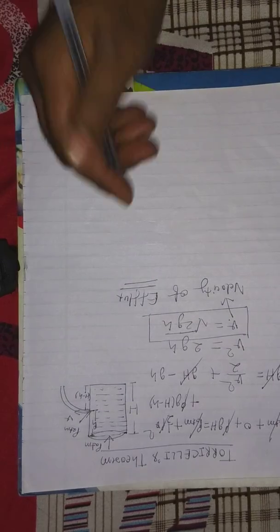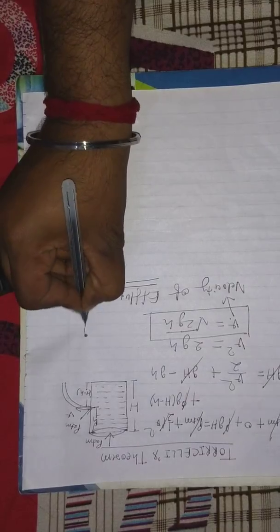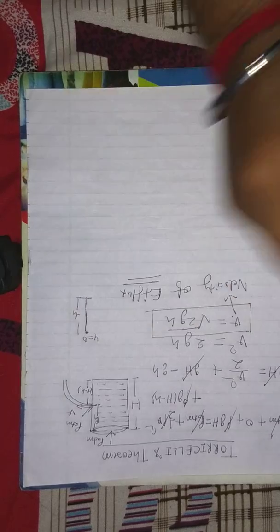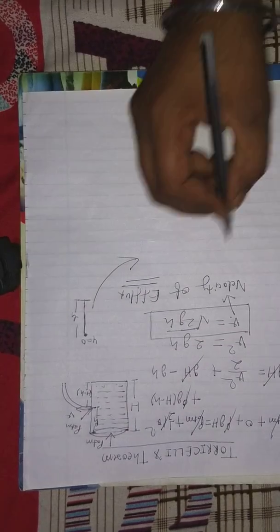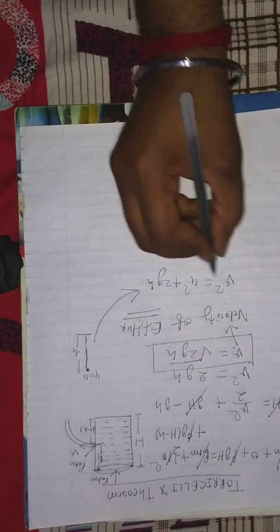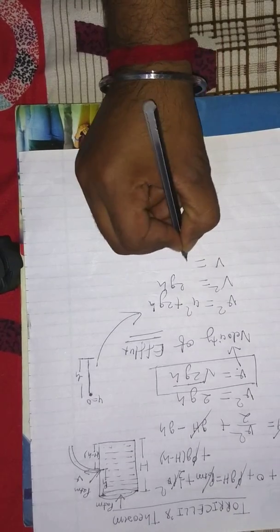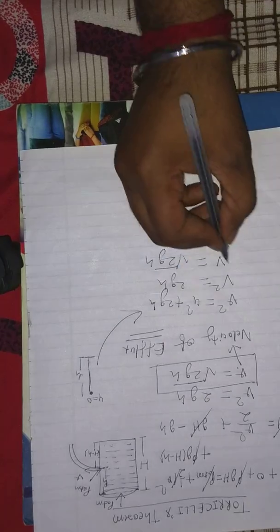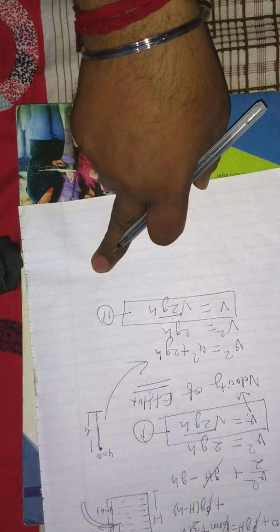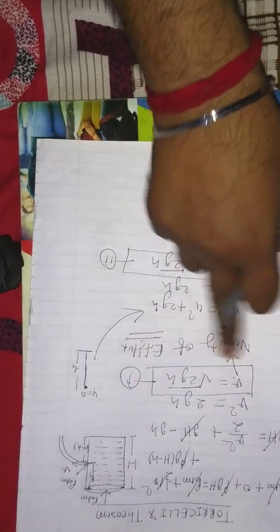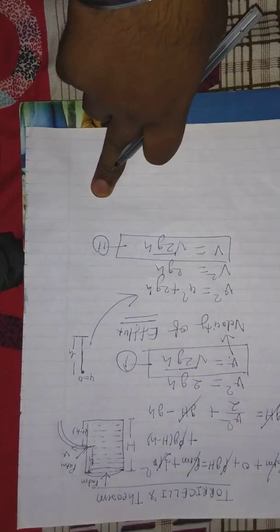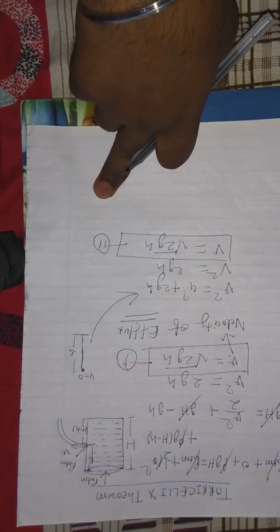Now, suppose a liquid drop falls freely from height h. Since initial velocity u = 0, using the third equation of motion: V squared = u squared + 2gh, which gives V squared = 2gh. Comparing this with equation 1, both are equal. That is exactly what Torricelli stated — the velocity of efflux equals the velocity of a liquid falling freely from height h. That is Torricelli's theorem. I hope students you understood. Thank you so much, that's all for today's video.